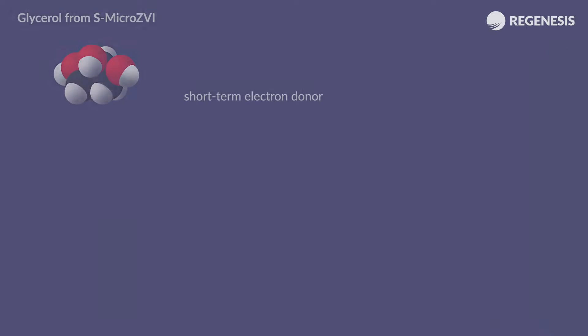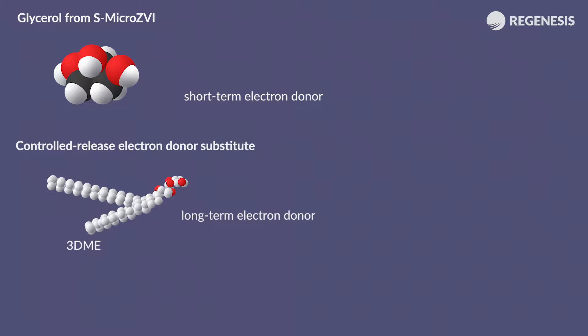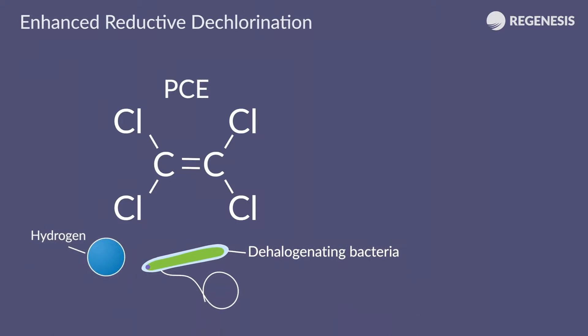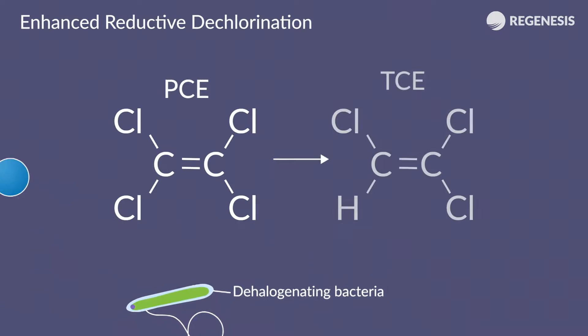Once injected into the subsurface, the glycerol in the S-Micro-ZVI and the 3DME micro-emulsion ferments to produce molecular hydrogen. The hydrogen is used by dehalogenating bacteria to sequentially degrade the contamination by enhanced reductive dechlorination.